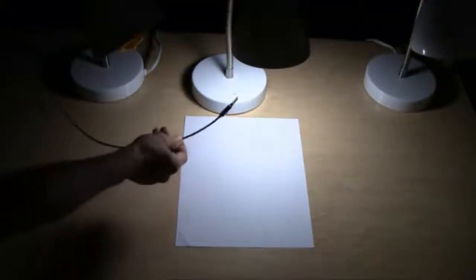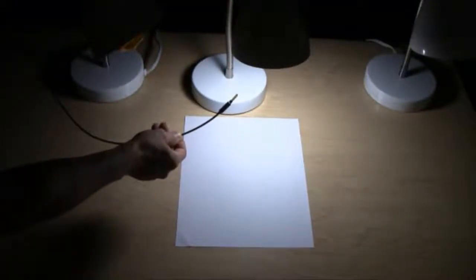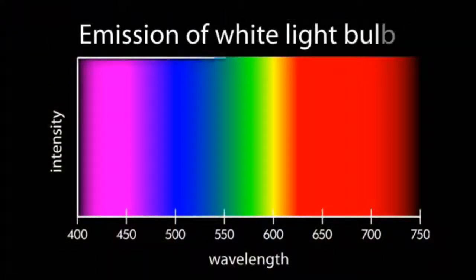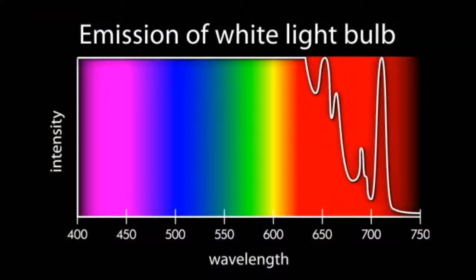You may also expect a white light bulb to emit all the colors in the visible spectrum. However, when we use the spectrophotometer, it shows that some wavelengths are not emitted as much as others.